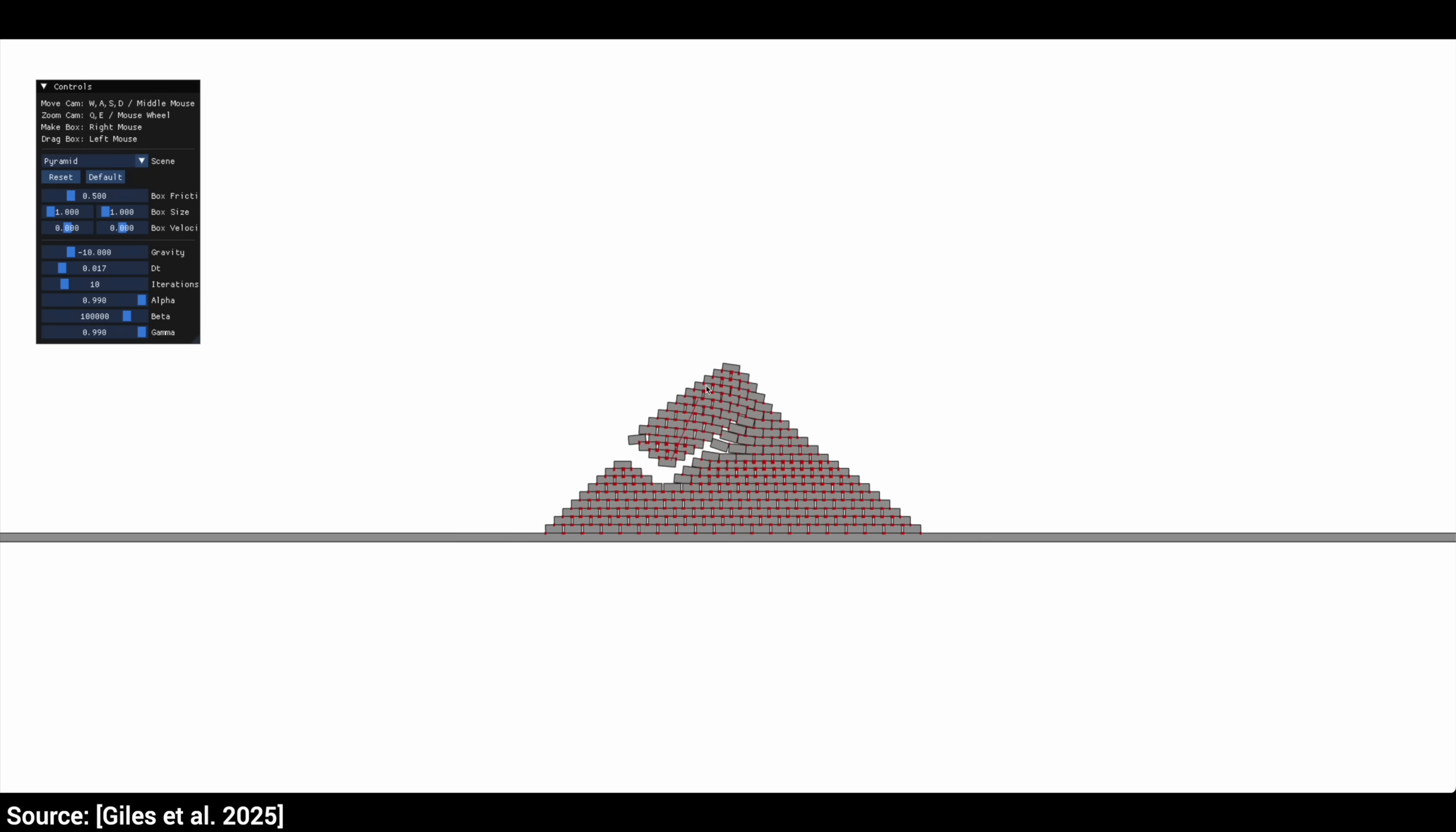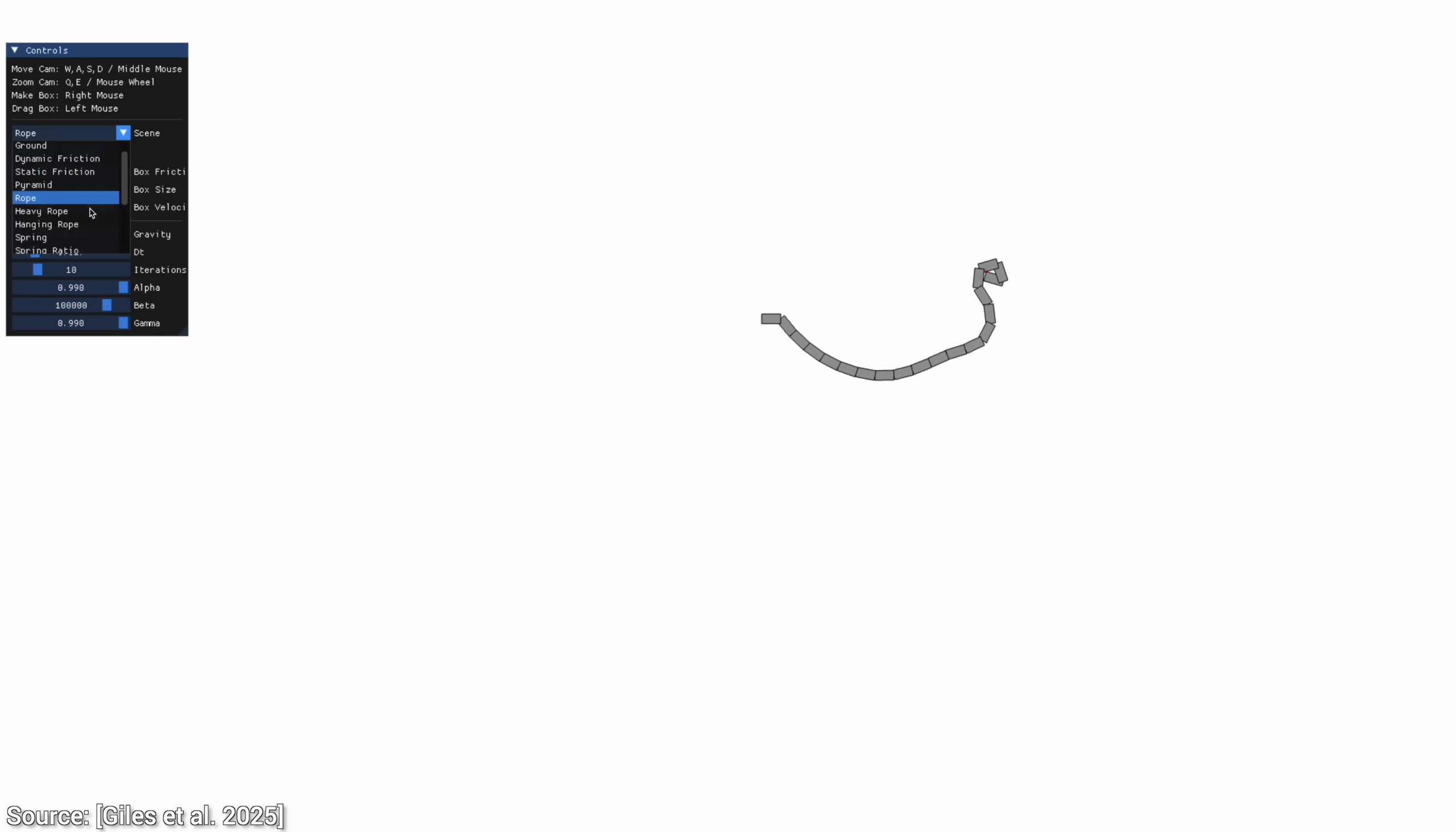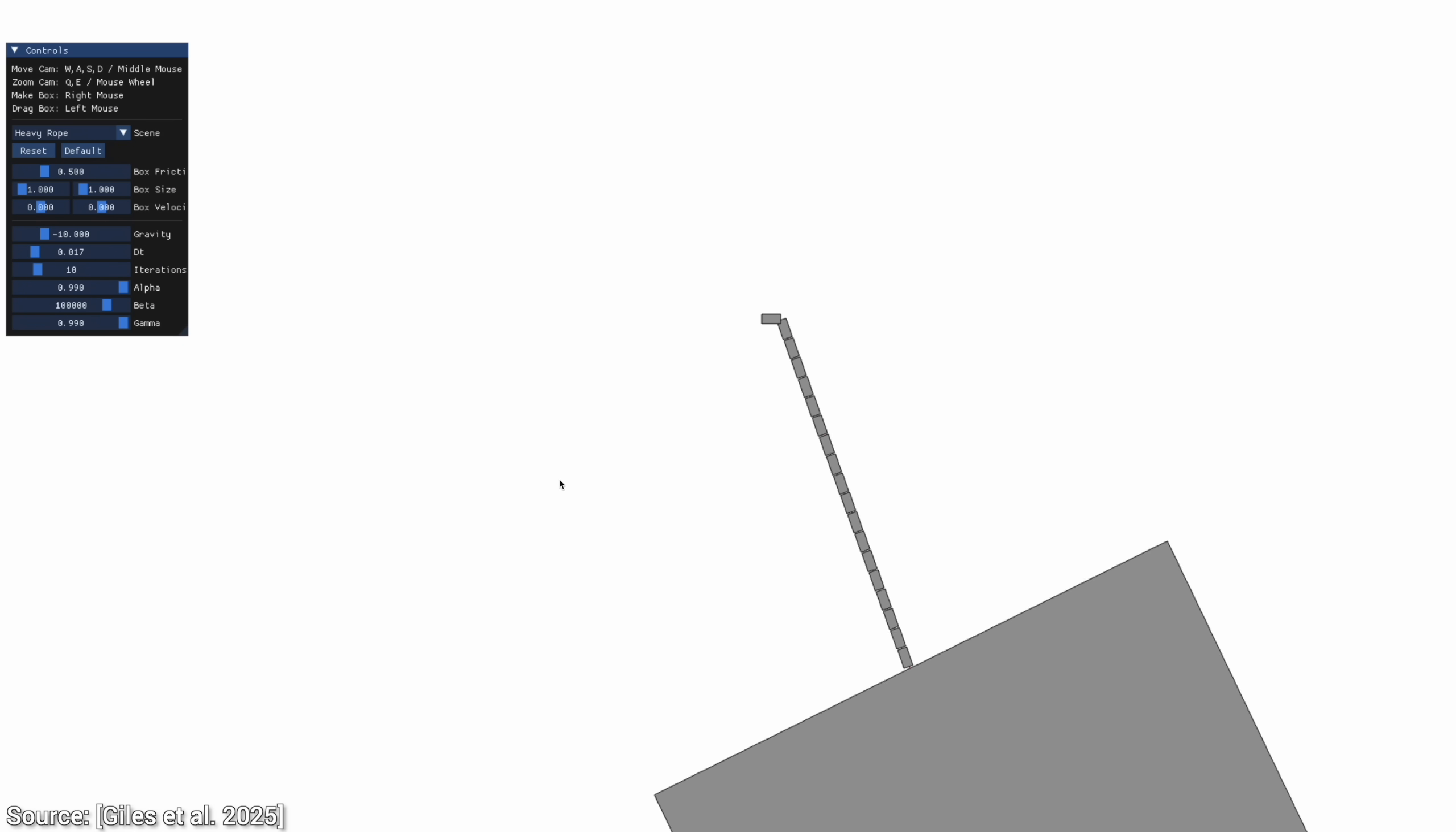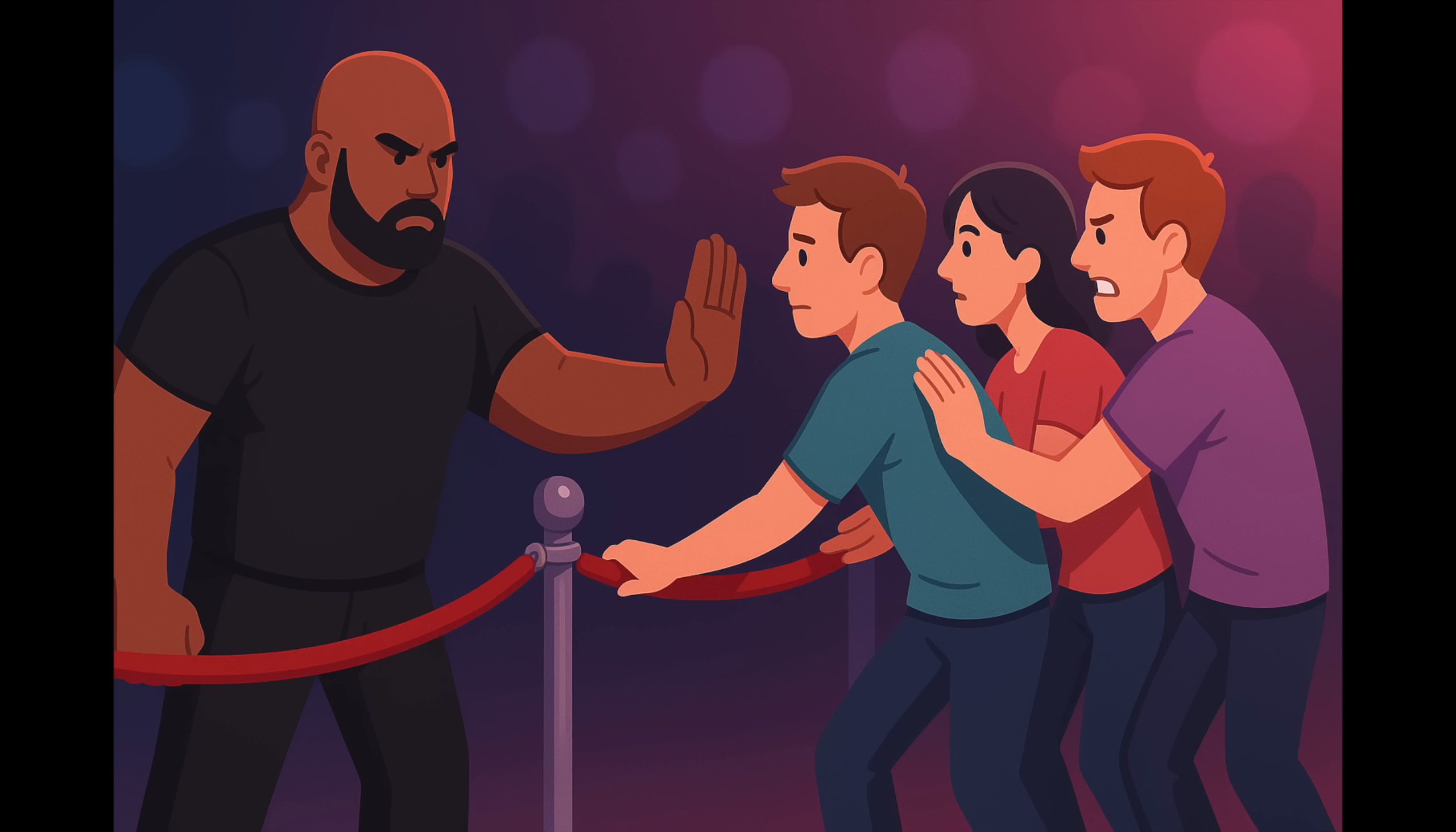So, how does it do all this black magic? You see, it is called augmented vertex block descent. And the augmented part means that instead of being too rigid from the start, it gradually adjusts how strict it is about enforcing rules during physics simulation. It's a bit like a bouncer at the club.